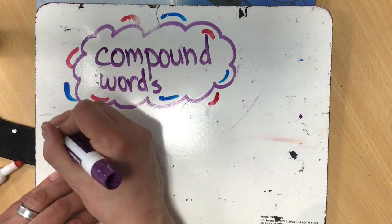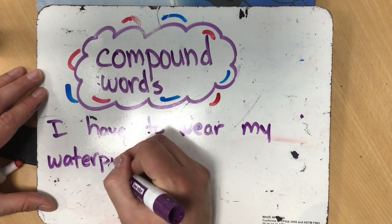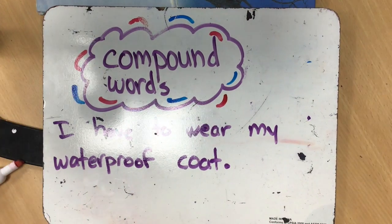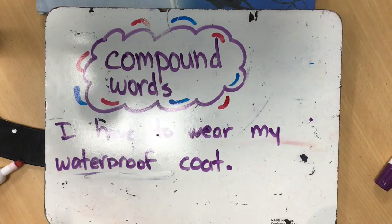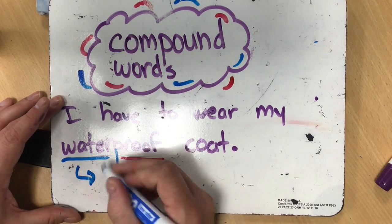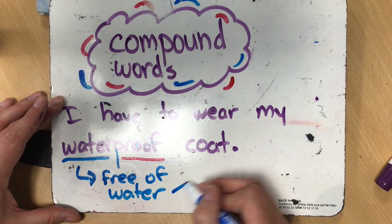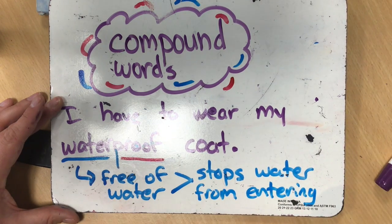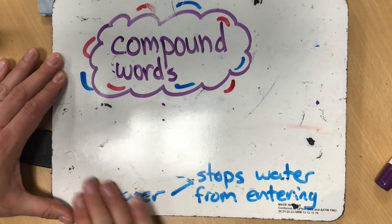Our third sentence: I have to wear my waterproof coat. Proof is a word we use to mean free of or not having. So waterproof — the literal definition — means free of water. But that is not quite an accurate definition of what a waterproof coat is. Waterproof, the more accurate definition, means to stop water from entering in. So as you can see, not all compound words you're coming across right now are as simple and straightforward.